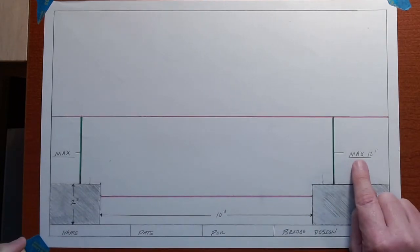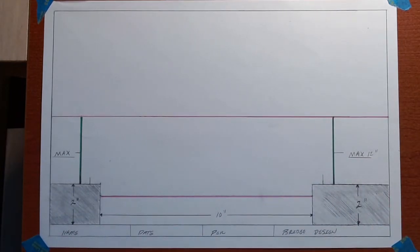You'll also notice I put a little mark here and a little mark here, and that's telling us the very minimum your bridge can be, which is 11 inches. I probably should write that somewhere for you.